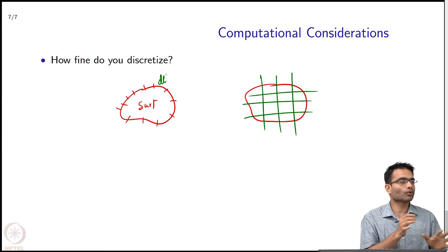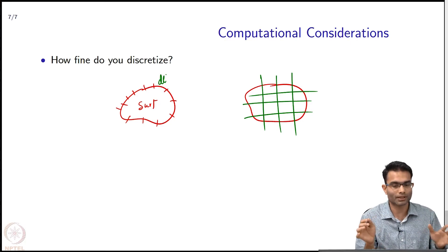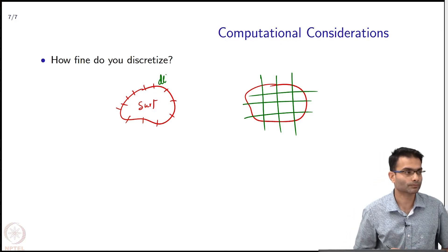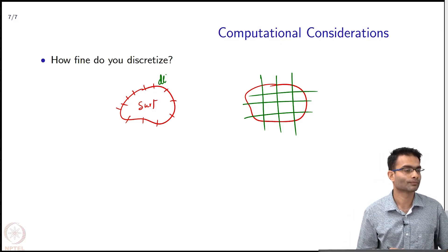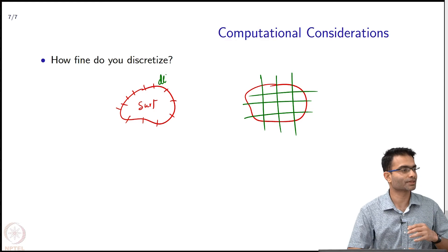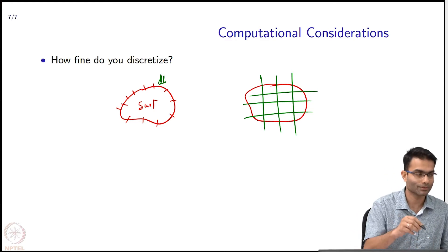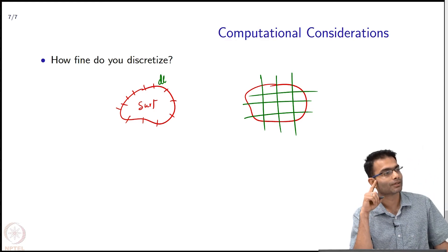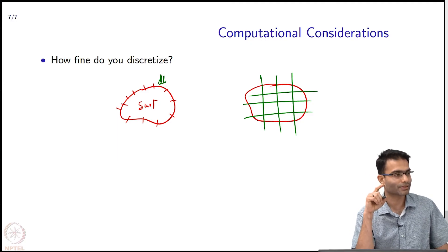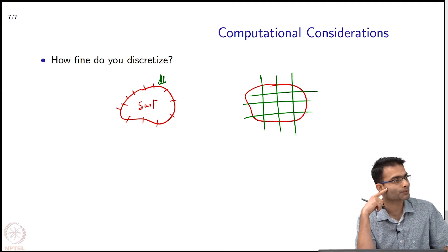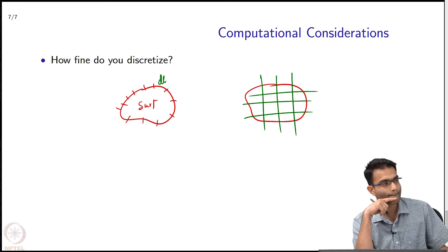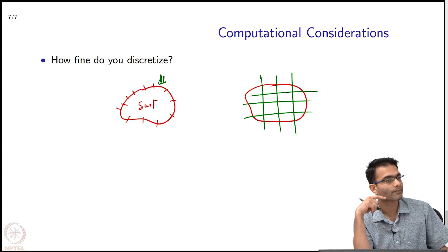So, how do we know whether we have reached the correct answer for DL? Think about it again, this is a common sense question. How would you figure out? Keep running the code until you get similar values. Yeah. So he is saying keep running the code until you get similar values.